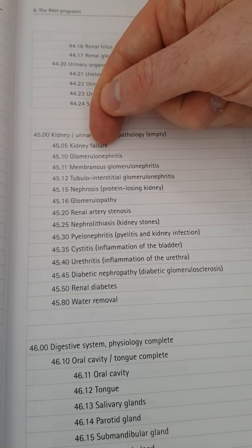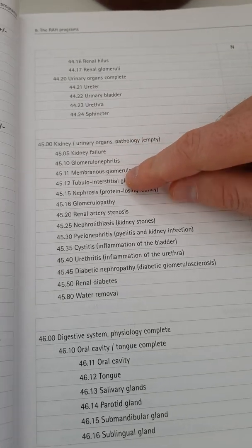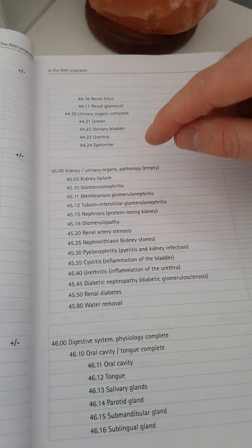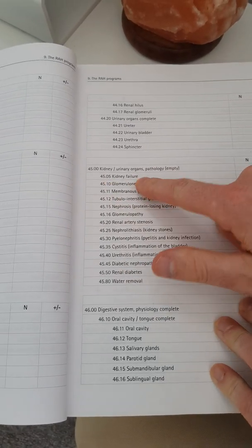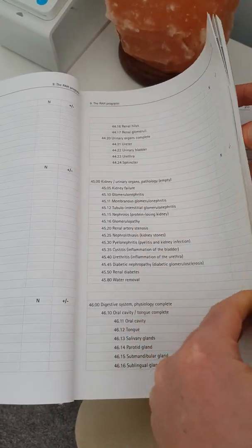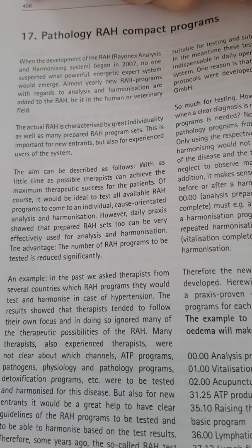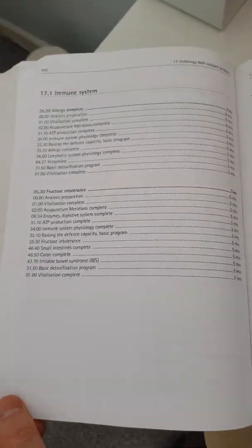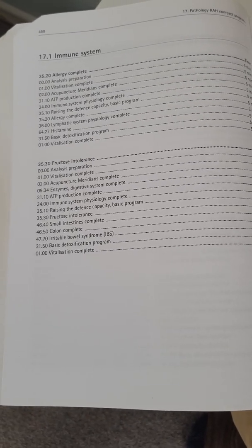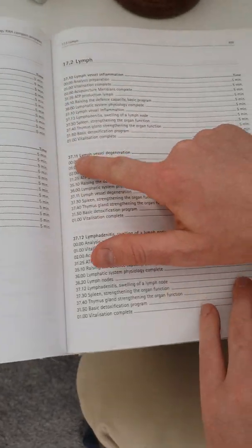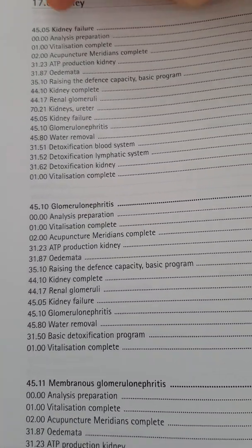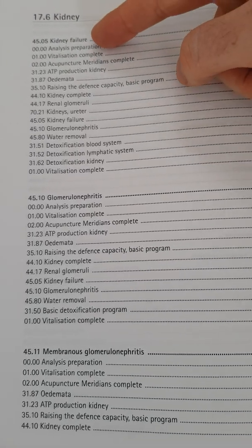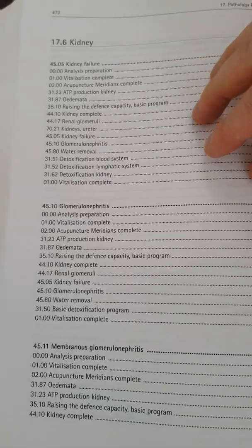The first condition listed is kidney failure. For every single condition in the whole book — not just kidneys — there is what's called a compact program, designed to help you quickly try and improve that organ. All compact programs begin on page 456. Here is a list of the compact programs for every single pathological fault mentioned in the book, each with a corresponding number. For the kidney section, compact program 4505 — kidney failure — is what the Ray and X experts recommend to quickly improve that condition.